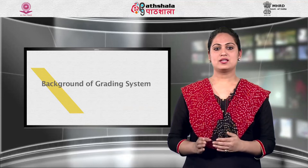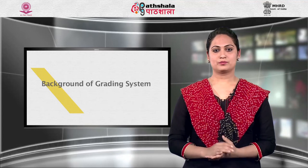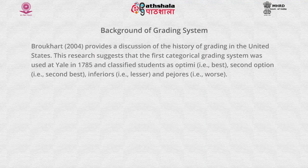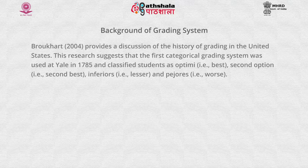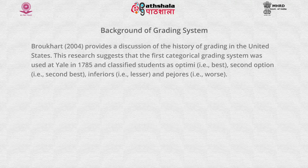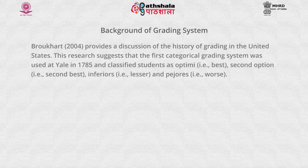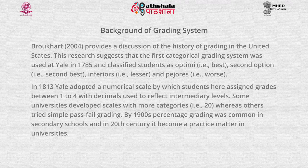Let's understand the origin of the grading system. Brokhart provides a discussion of the history of grading in the United States. Research suggests that the first categorical grading system was used at Yale in 1785 and classified students as optimi (best), second optimi (second best), inferiors (lesser), and pejors (worse).